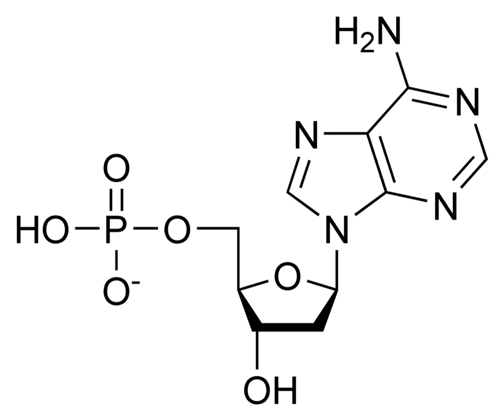CTP is subsequently formed by amination of UTP by the catalytic activity of CTP synthetase. Glutamine is the NH3 donor and the reaction is fueled by ATP hydrolysis: UTP + glutamine + ATP + H2O → CTP + ADP + phosphate. Cytidine monophosphate is derived from cytidine triphosphate with subsequent loss of 2 phosphates.